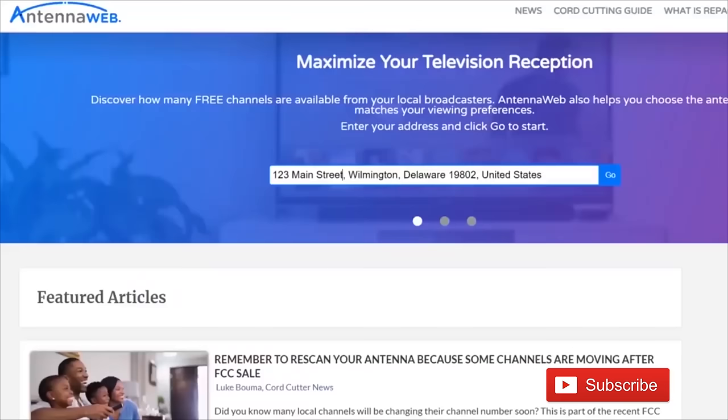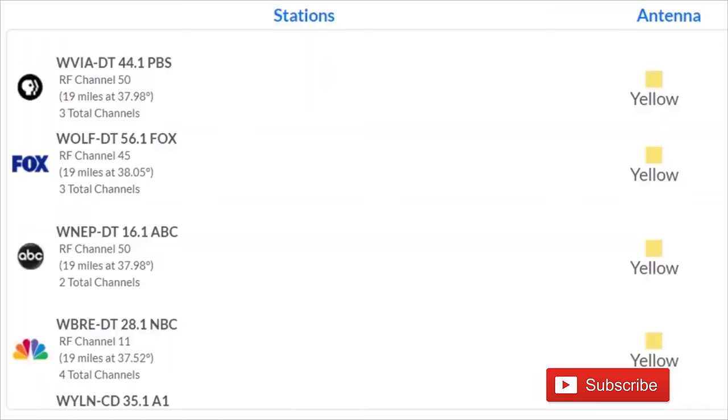To find out what channels your local TV stations are broadcasting on, go to antennaweb.org, type in your address, and look for the RF channel number. The virtual channel is a channel that the station identifies as. So in my market, NBC 28 WBRE. But the RF channel is the channel that they broadcast on.